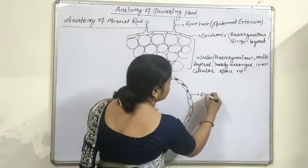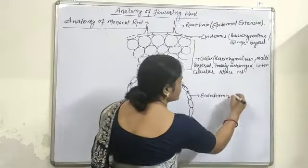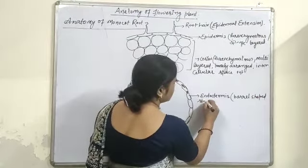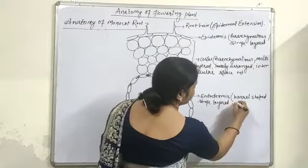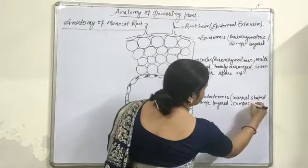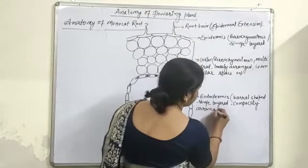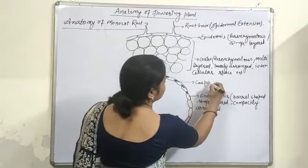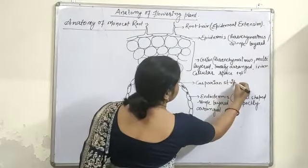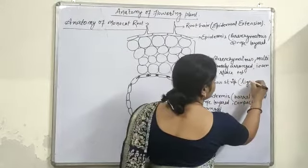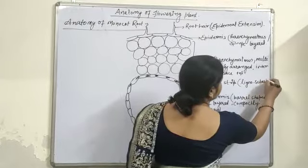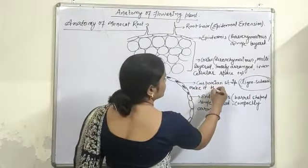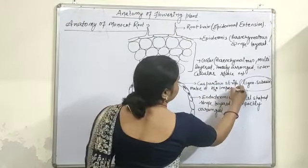The endodermis is barrel-shaped, single-layered, and compactly arranged. It has tangential wall deposition known as the Casparian strip, which is made of ligno-suberin deposition. This ligno-suberin deposition makes it water-impermeable.